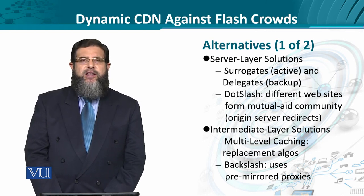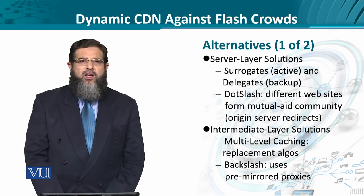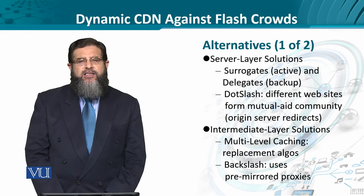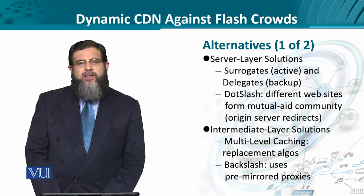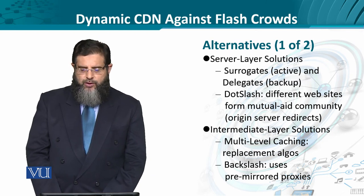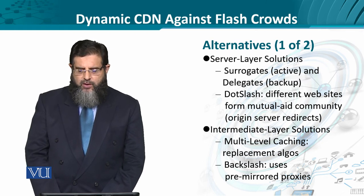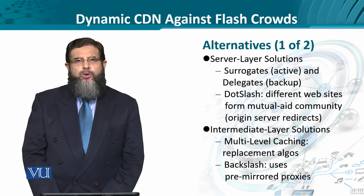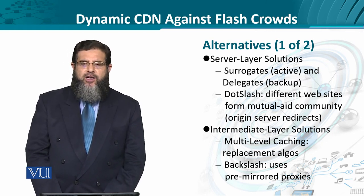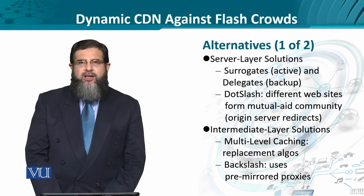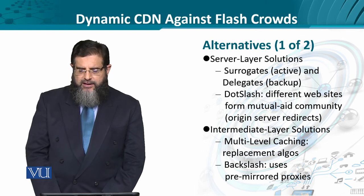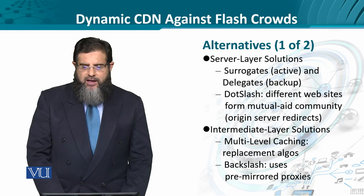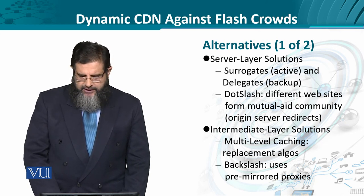Then there is the intermediate layer solution — farther from the server, closer to the clients. The first approach is to identify how and where content is best replicated and replaced, with multi-level caching being one good idea. There is also a research paper known as Backslash, where pre-mirrored proxies replicate only part of the content rather than 100%, offloading the centralized approach by distributing content across caches of servers across the CDN community.